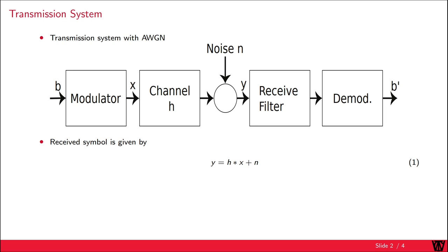However, at first we want to discuss the receive filter. The received symbol y is given by the convolution of the channel with the transmitted symbol plus the noise. For simplicity, we assume a flat fading channel. That means we only have one channel tap. Therefore, we can replace the convolution with a simple multiplication.